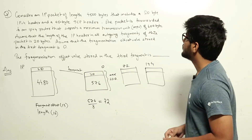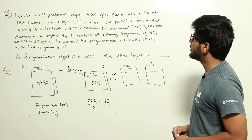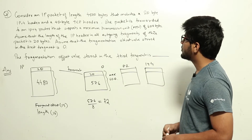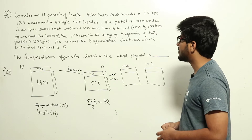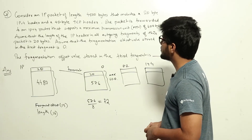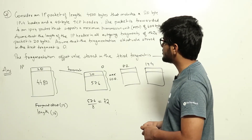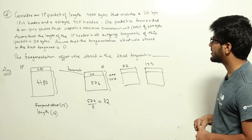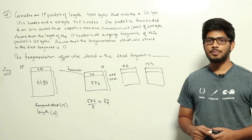Consider an IP packet of length 4500 bytes that includes a 20-byte IPv4 header and a 40-byte TCP header. The packet is forwarded to an IPv4 router that supports a maximum transmission unit of 600 bytes. Assume the IP header in all outgoing fragments is 20 bytes, and the fragmentation offset in the first fragment is 0. The question asks: what is the fragmentation offset stored in the third fragment? This is a computer networks question regarding IP fragmentation.